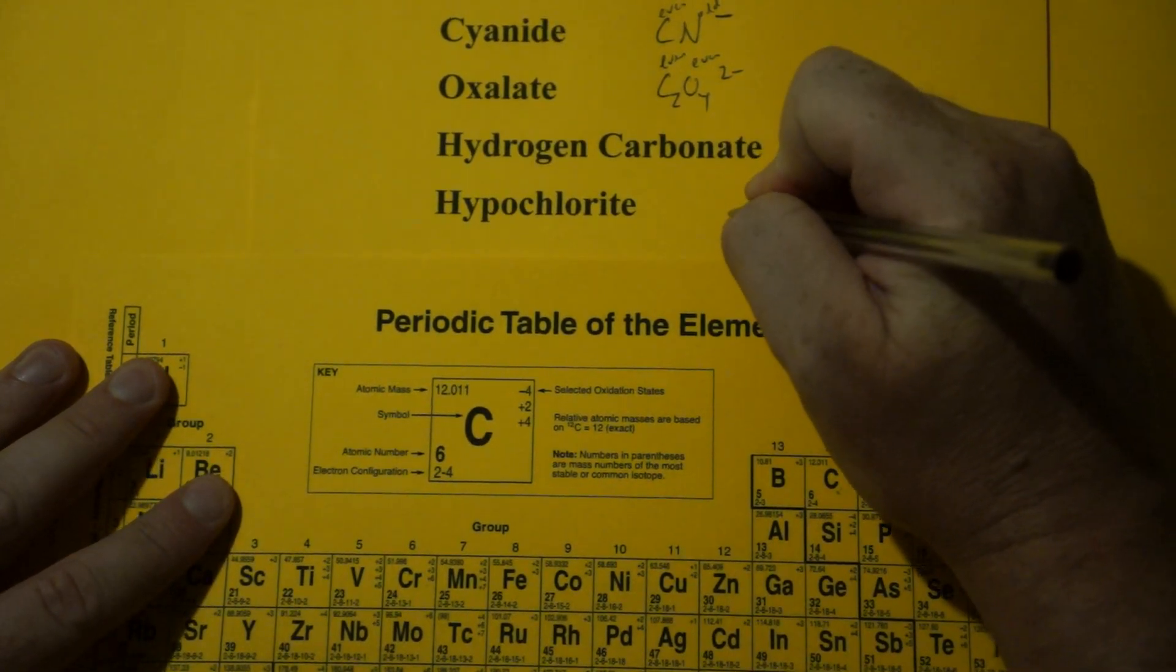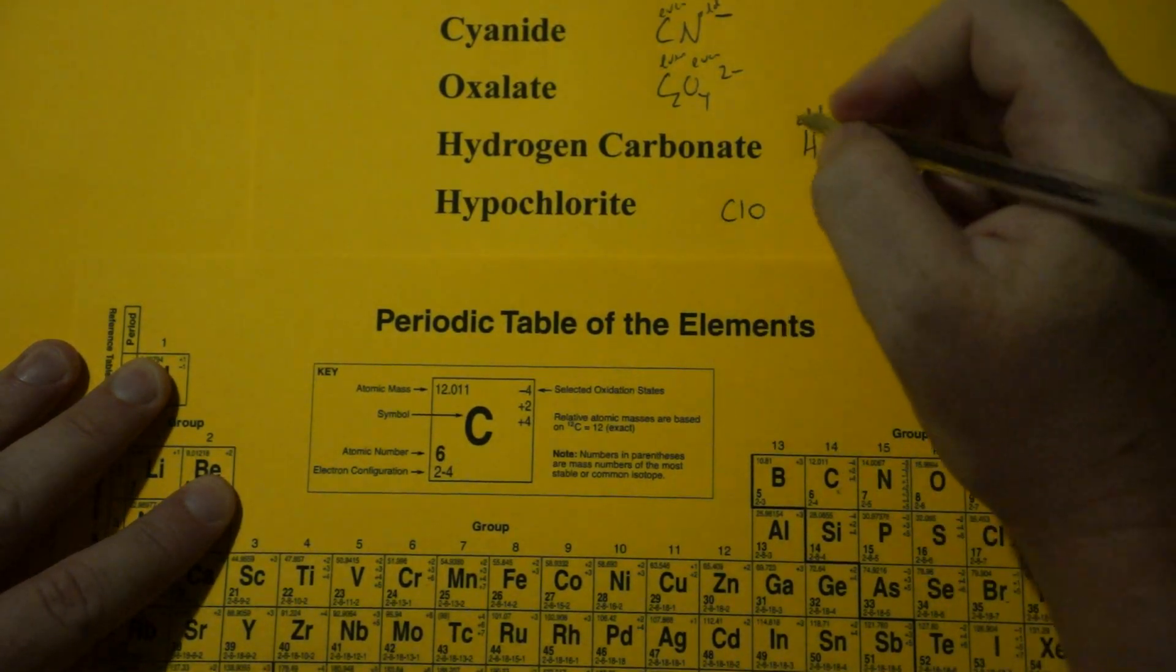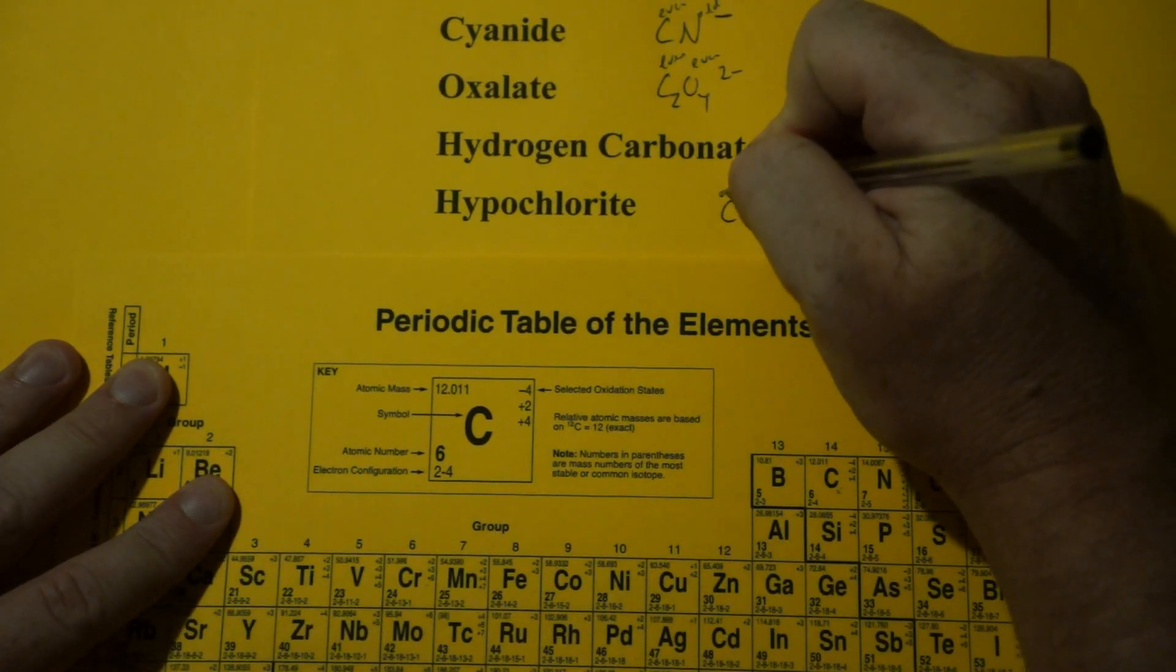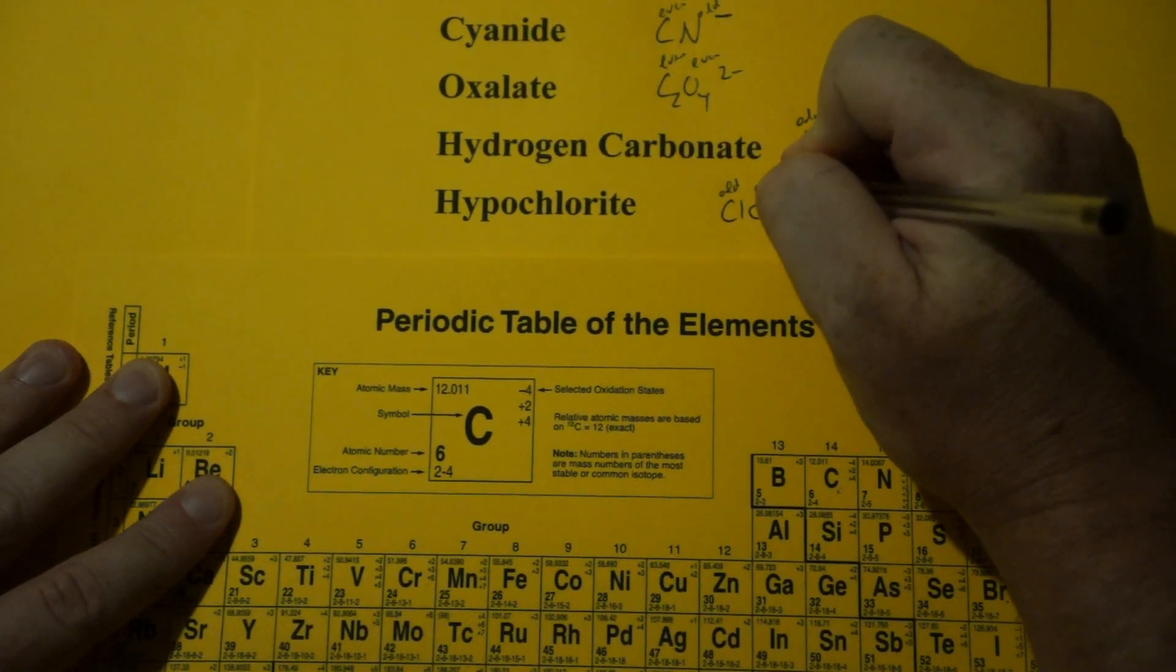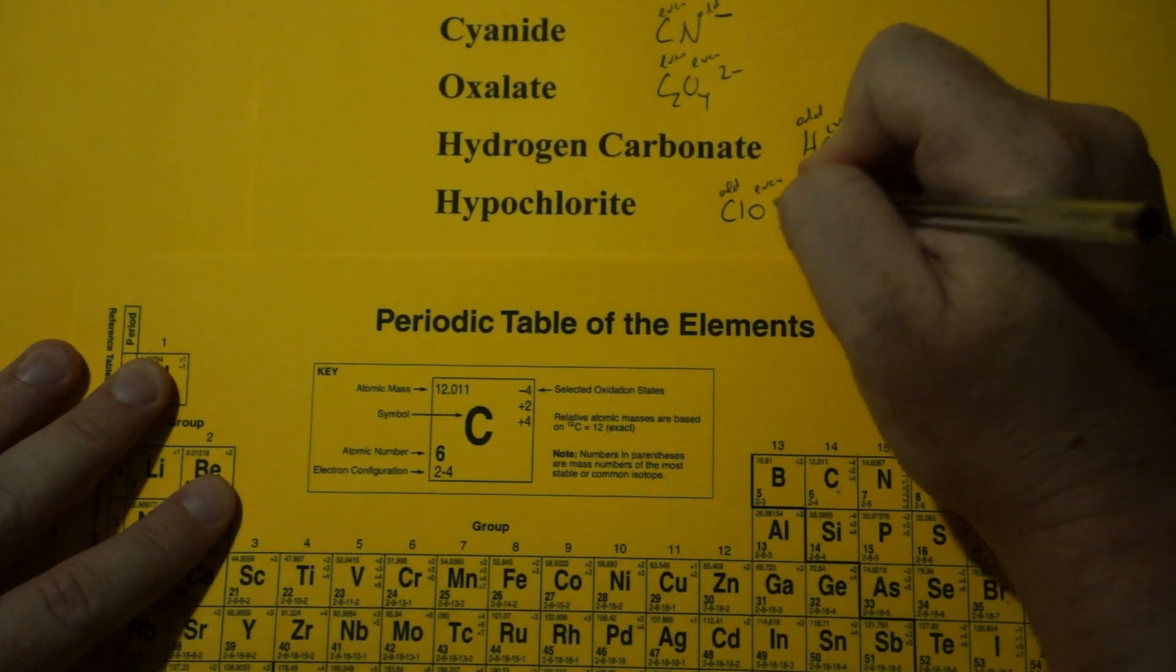Hypochlorite. That's ClO or OCl. Chlorine is in group 17. That's odd. Oxygen is in group 16. That's even. Odd and even is an odd. Minus 1.